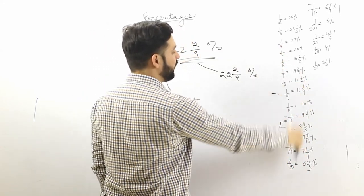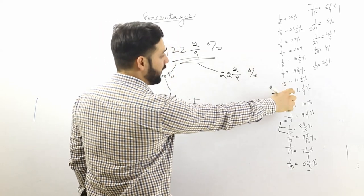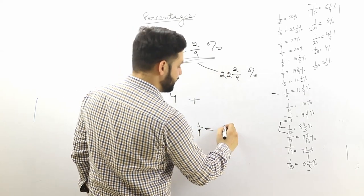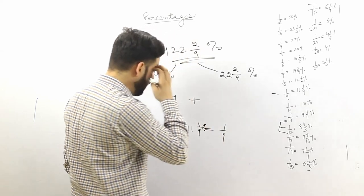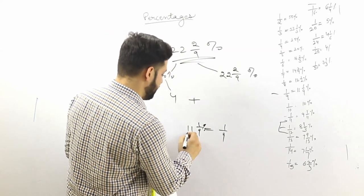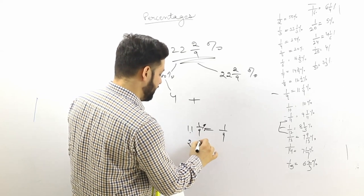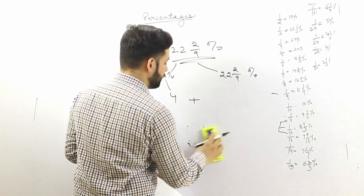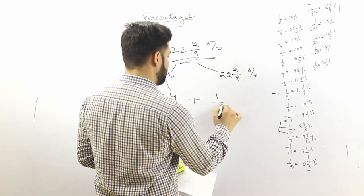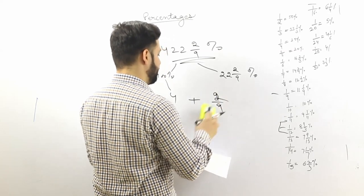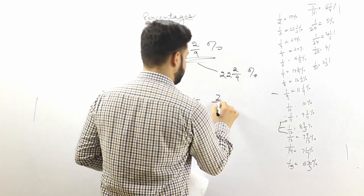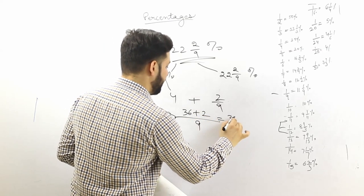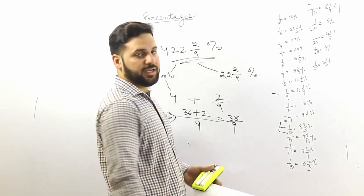Now, 1/9 equals 11 and 1/9 percent. If we multiply by 2, it becomes 22 and 2/9 percent. So for a percentage like 422 and 2/9 percent, 400 percent is 4, plus 22 and 2/9 percent equals 2/9. The answer as a fraction is 38/9.